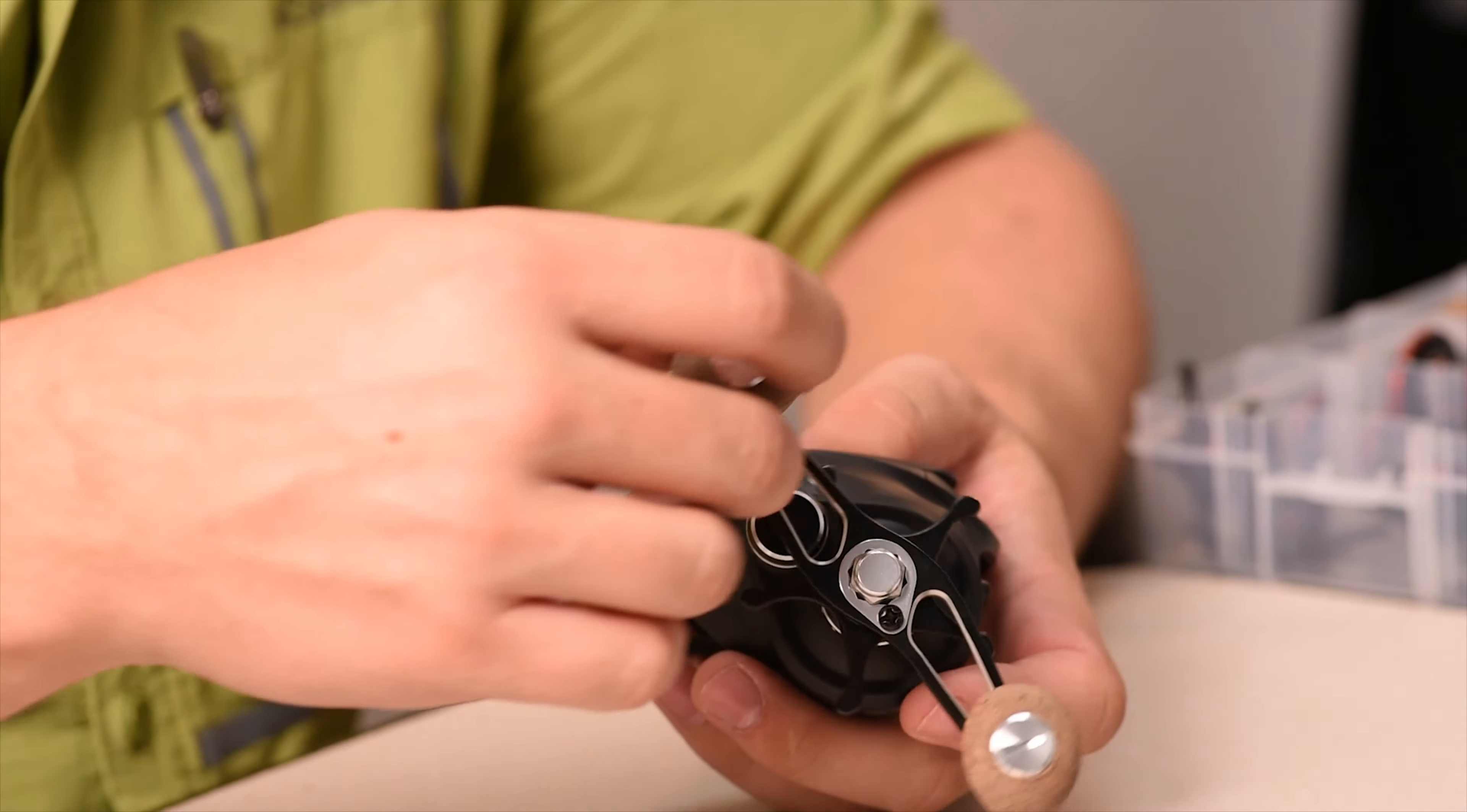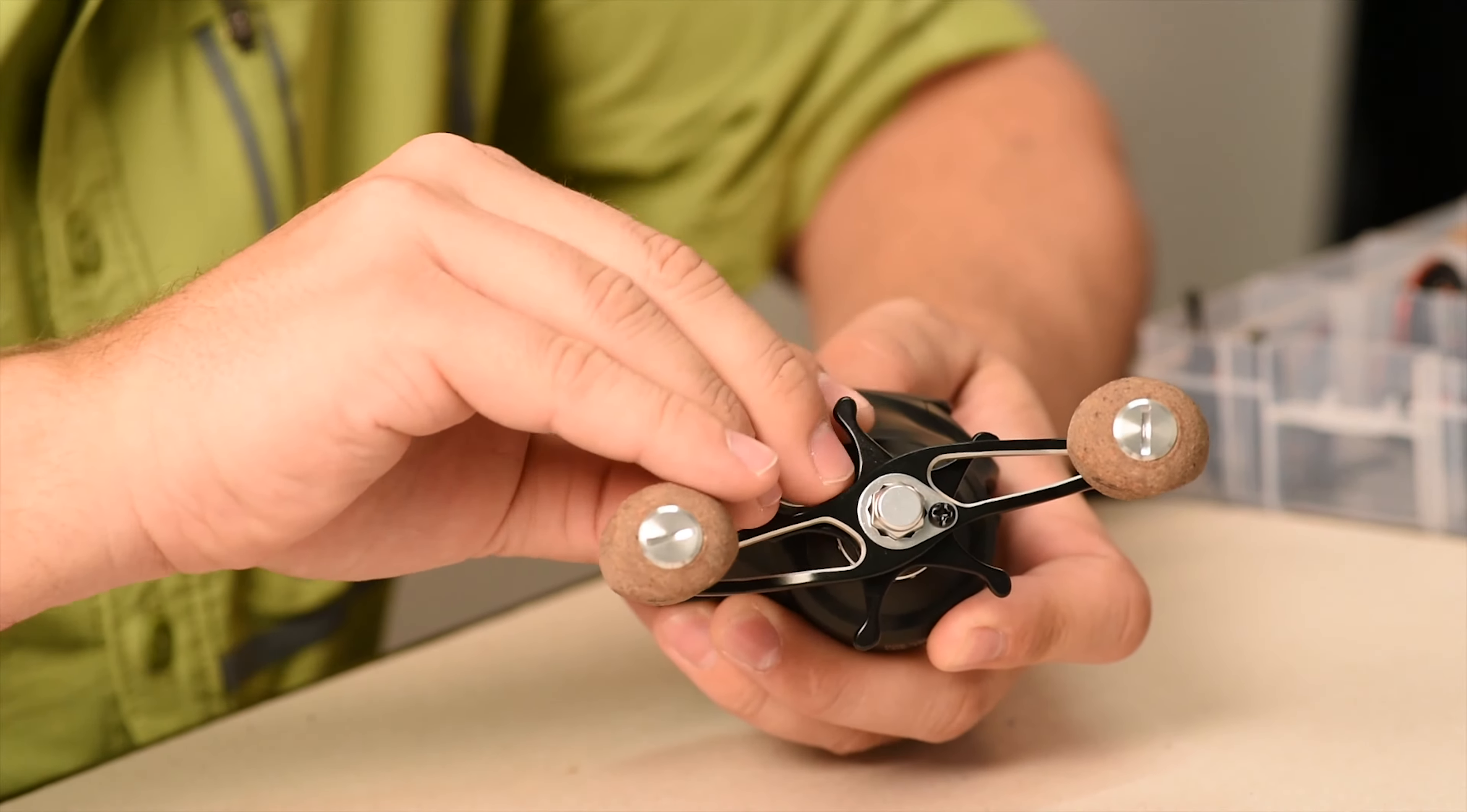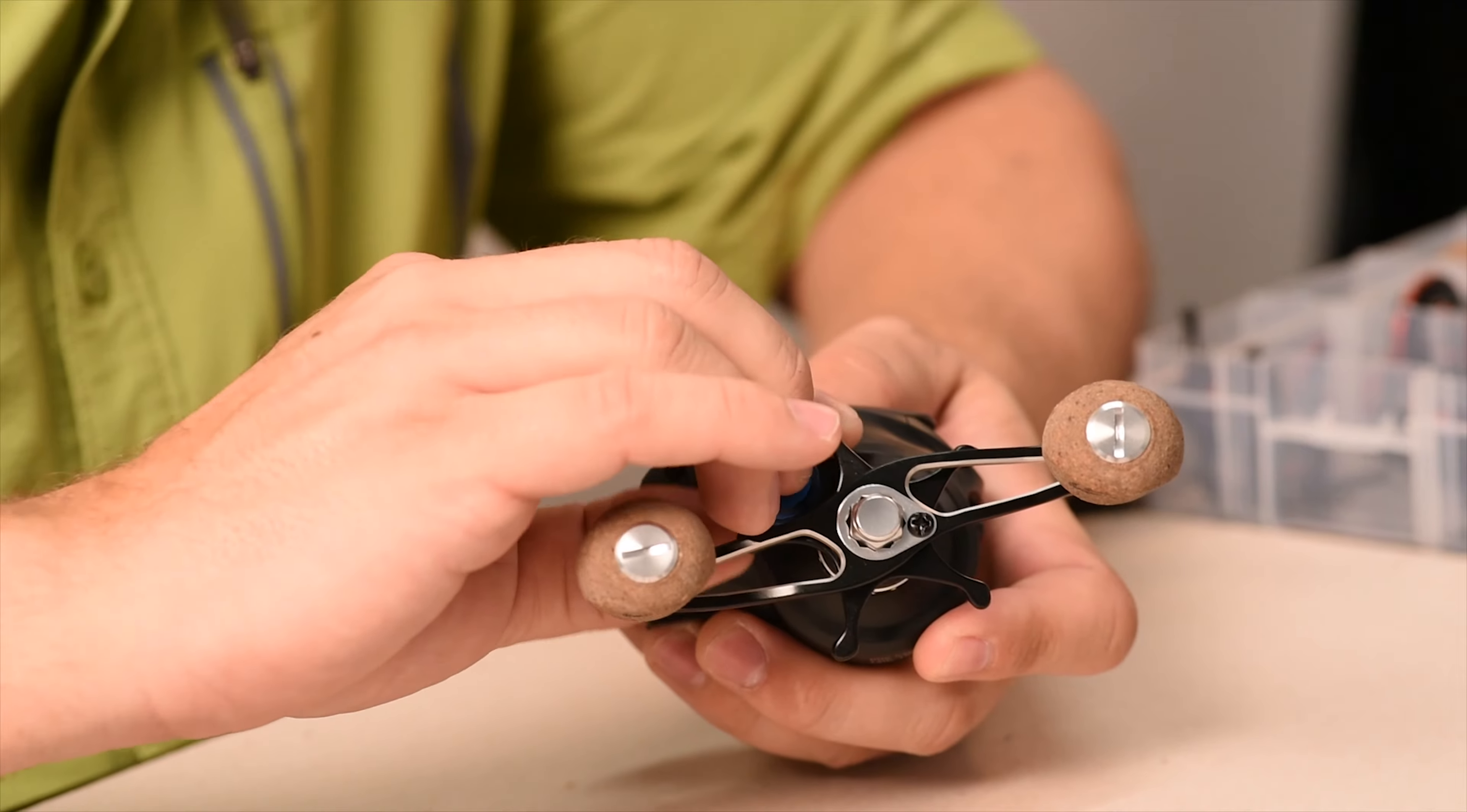To install the brand new Trick Shop cast control cap, all you need to do is remove the stock cast control cap. Make sure you position the star so that it doesn't get in the way. Turn the cast control cap counterclockwise until it comes off and set it aside.